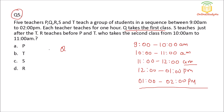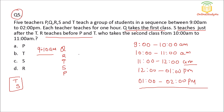Q takes the first class, so Q is teaching 9 to 10 AM. Then: S teaches just after T, so S is placed immediately after T. R teaches before both P and T. So I will place it such that R comes before T and P in the sequence.